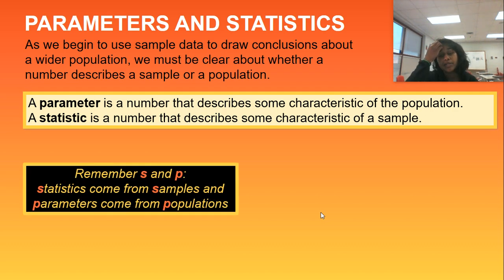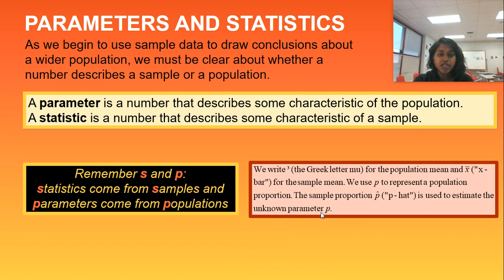They just want you to remember some simple letters. S is for statistics, is for sample, and P is for parameters for population. These words just mean description of characteristics, but parameters specifically for a population, and statistic is specifically for a sample set.